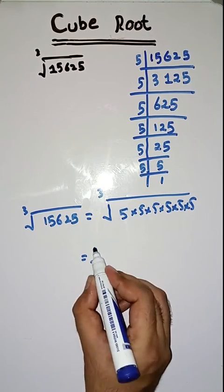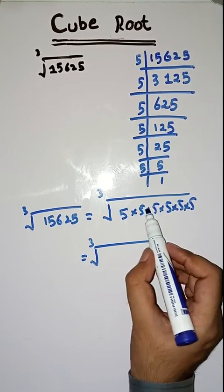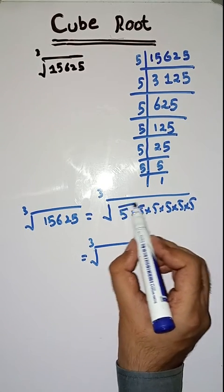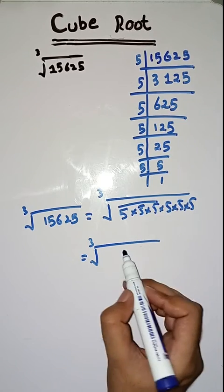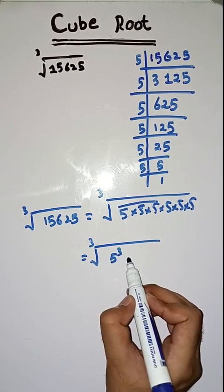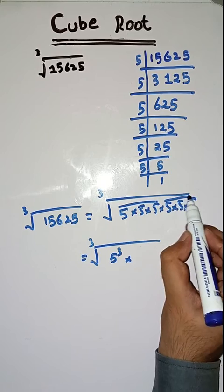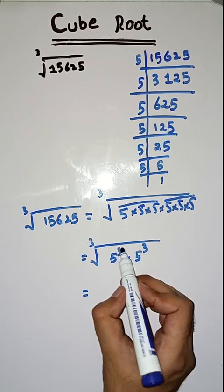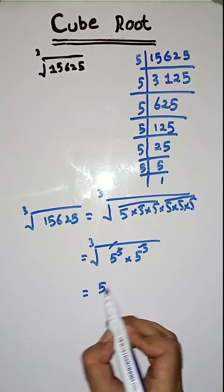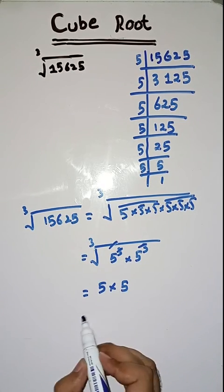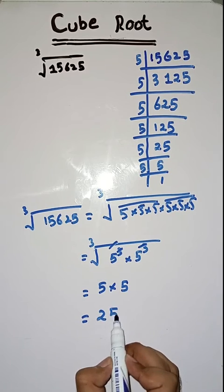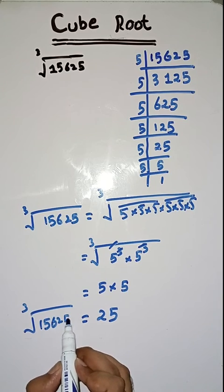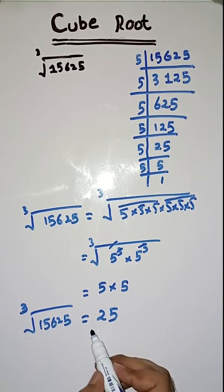Now students, what we have to do? We have to combine these prime factors. As 5 appears 3 times, we can write it as 5 to the power 3, multiplied by again 5 to the power 3. Now the power and the cube root will cancel. We are left with 5 into 5. 5 into 5 is equal to 25. So students, the cube root of 15625 is equal to 25.